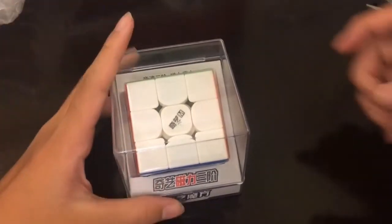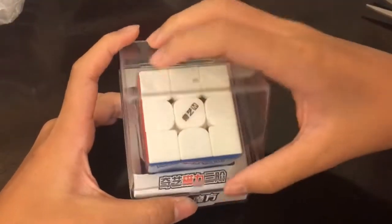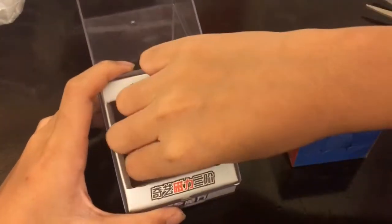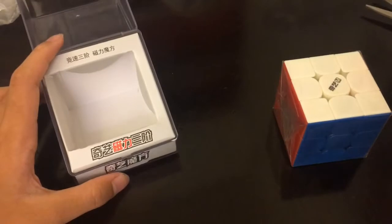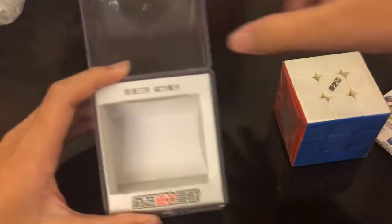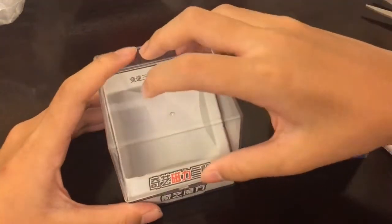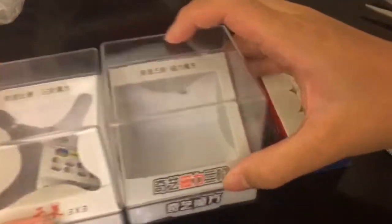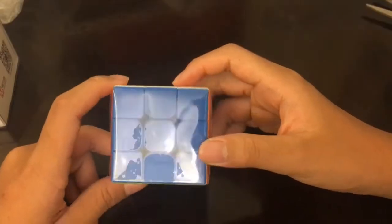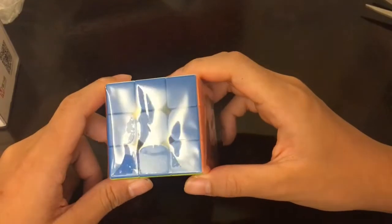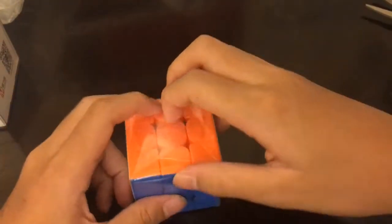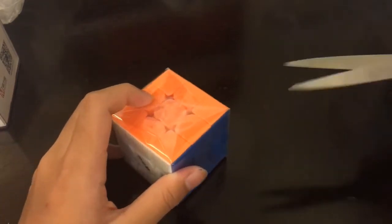I got rid of that top layer of plastic, so we can finally open this plastic box. This is exactly just like the Wuwei box. The cube is covered in lube, as you can see right here.